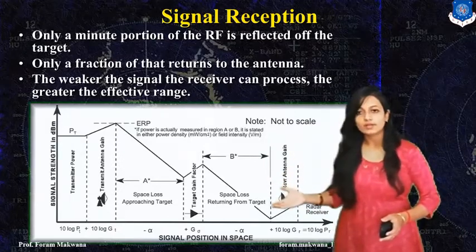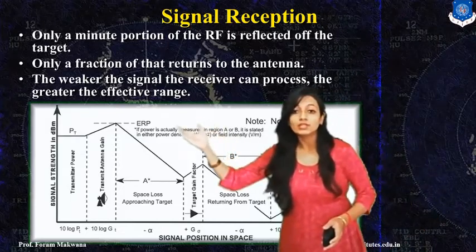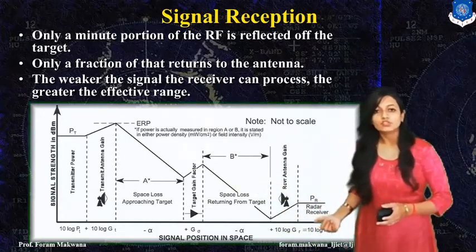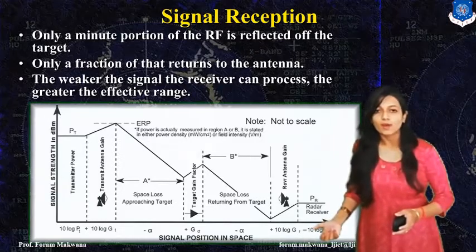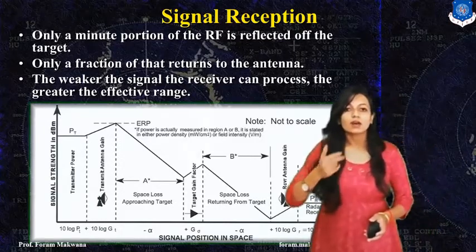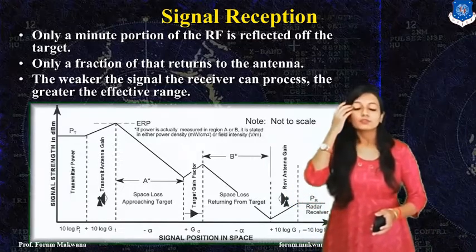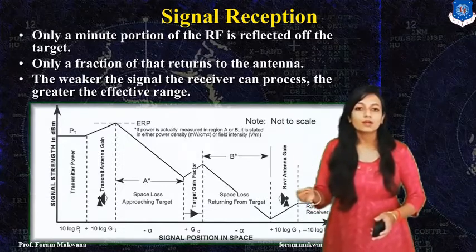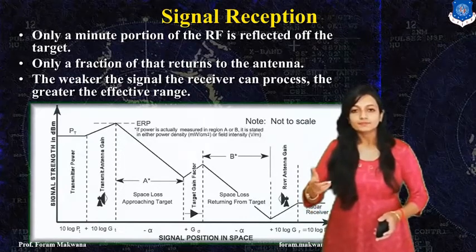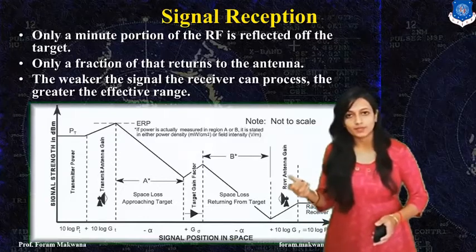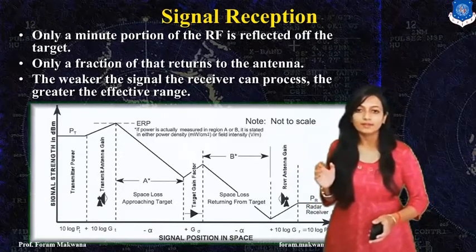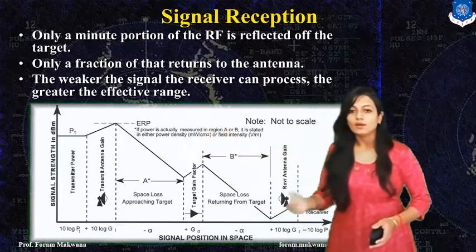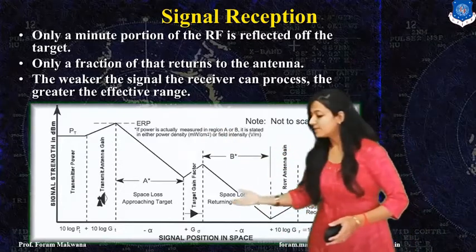From this graph, you can identify that the signal strength decreases as it reaches the radar receiver. Why? Because it has to travel a long distance through space. As the signal travels through space, some part of the signal is absorbed, causing the signal to be attenuated, resulting in signal loss. This is how signal strength is dependent on the distance the signal travels in space.